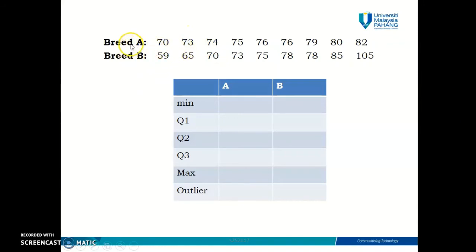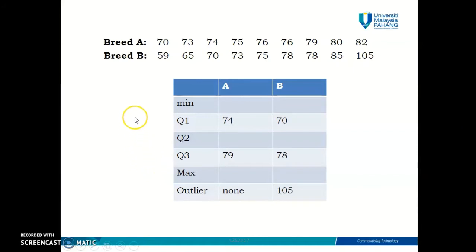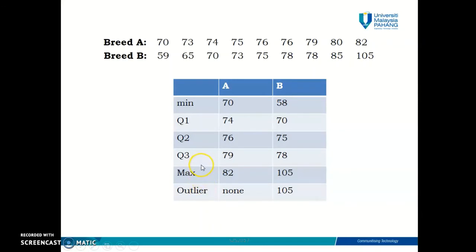The data sets show the amount of milk produced by Cow Breed A and Cow Breed B. We had already calculated Q1 and Q3 and determined outliers for both data sets in the previous video. Now I'm filling in the table with the remaining information — collecting all five number summaries. Quartile two, which is the median, is found using the same method as Q1 and Q3, and the minimum and maximum values are simply the smallest and largest data in the data set.